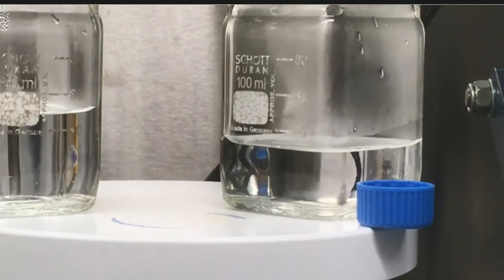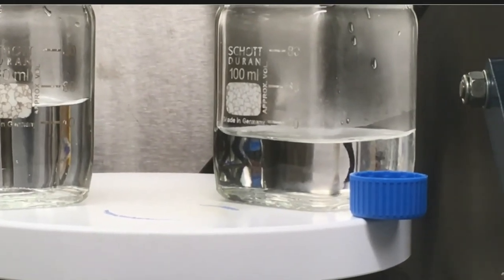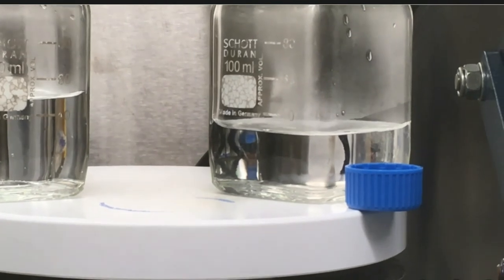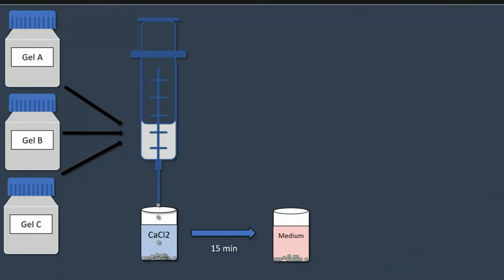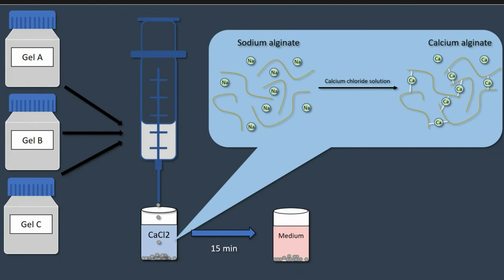A calcium chloride solution was used for the polymerization of the hydrogel. In this process, the alginate and the calcium ions formed complexes, resulting in reversible cross-linking and consequently led to the mechanically stable bead. After 15 minutes, the beads were washed with PBS and stored in cell culture medium.